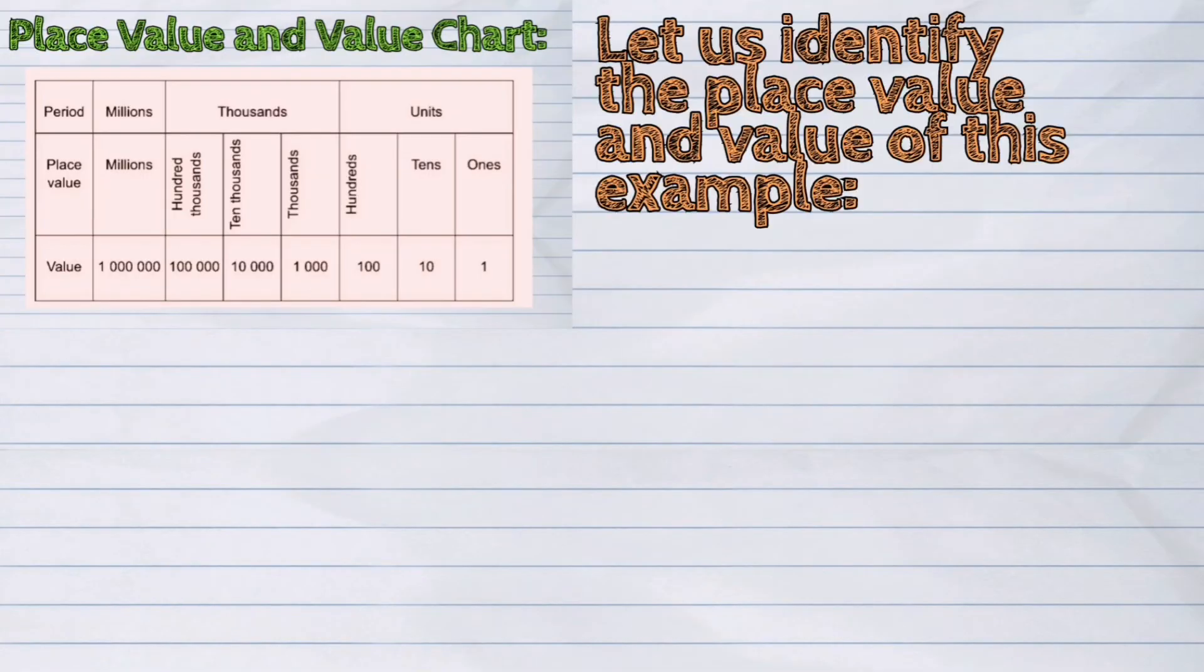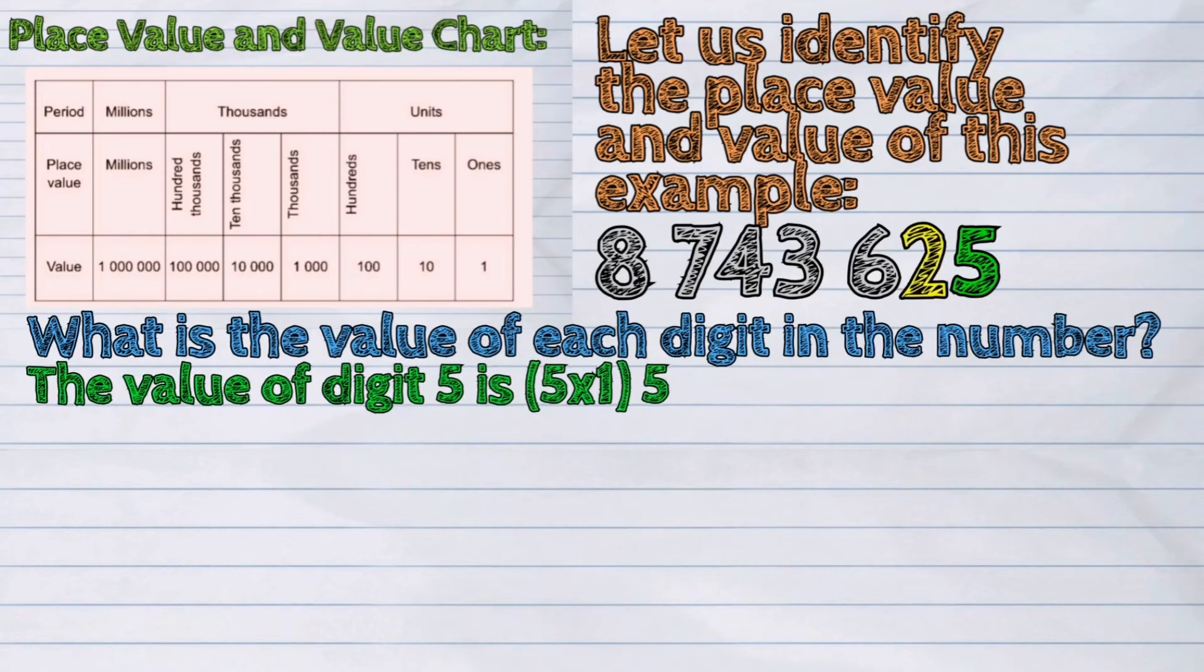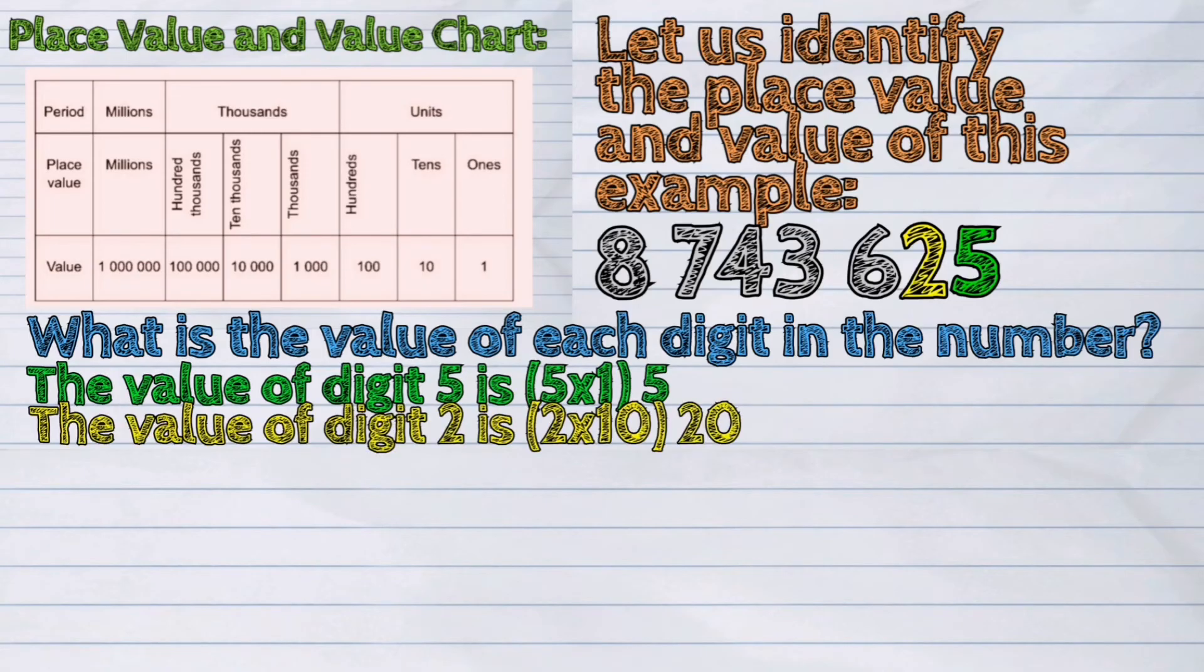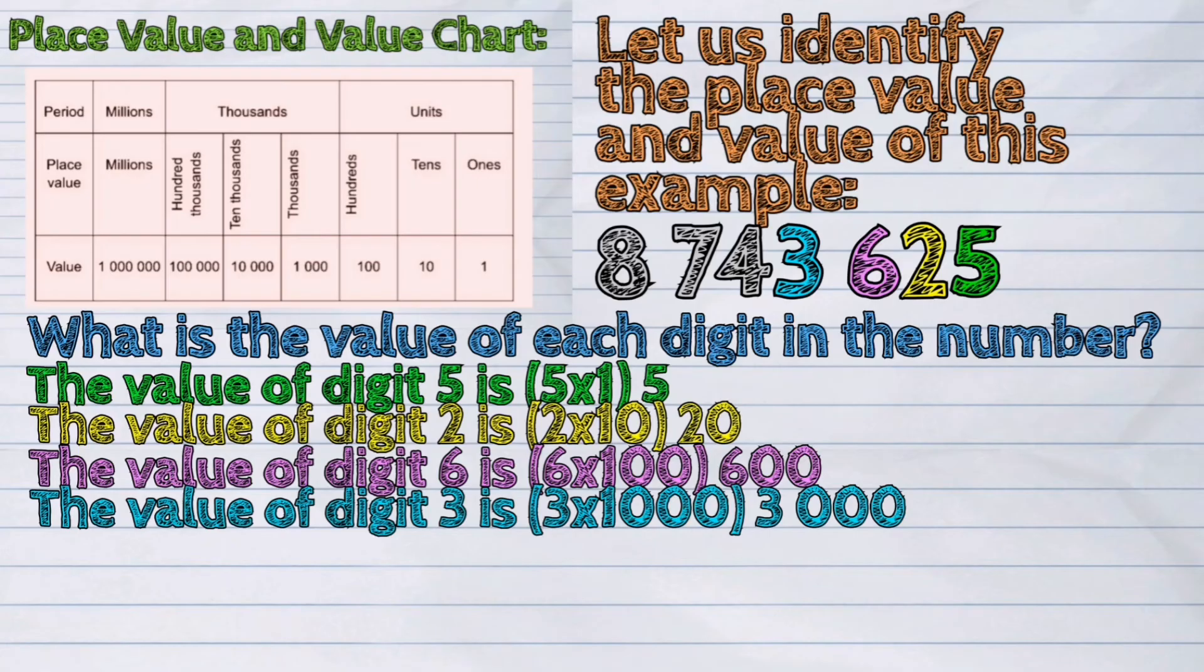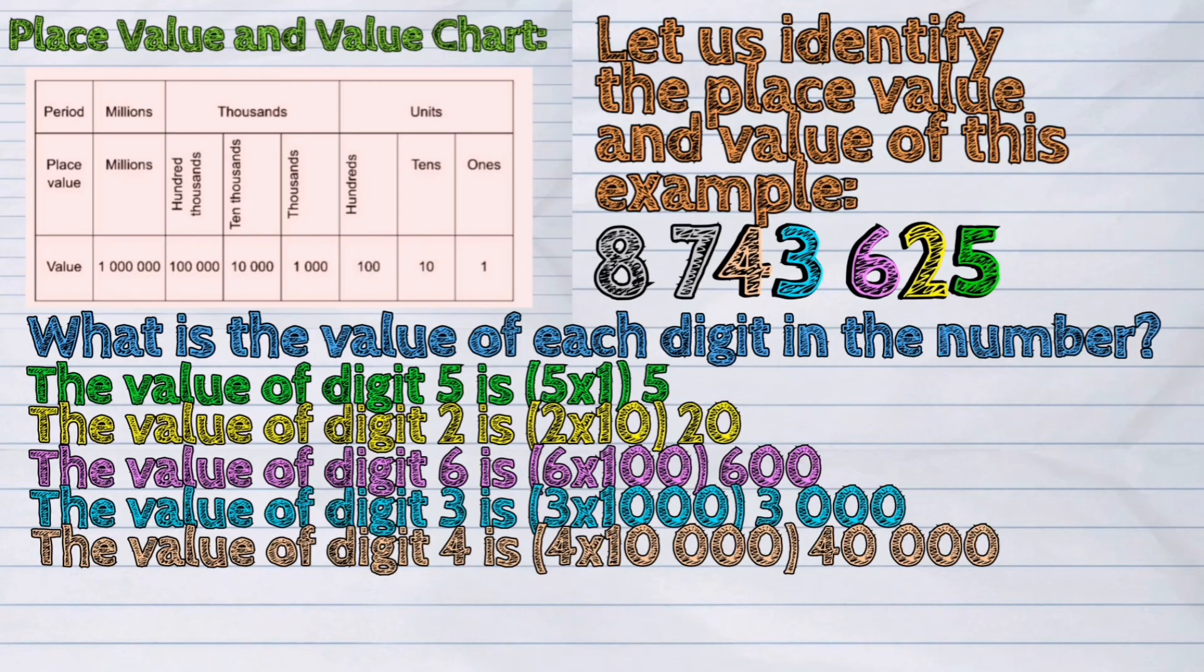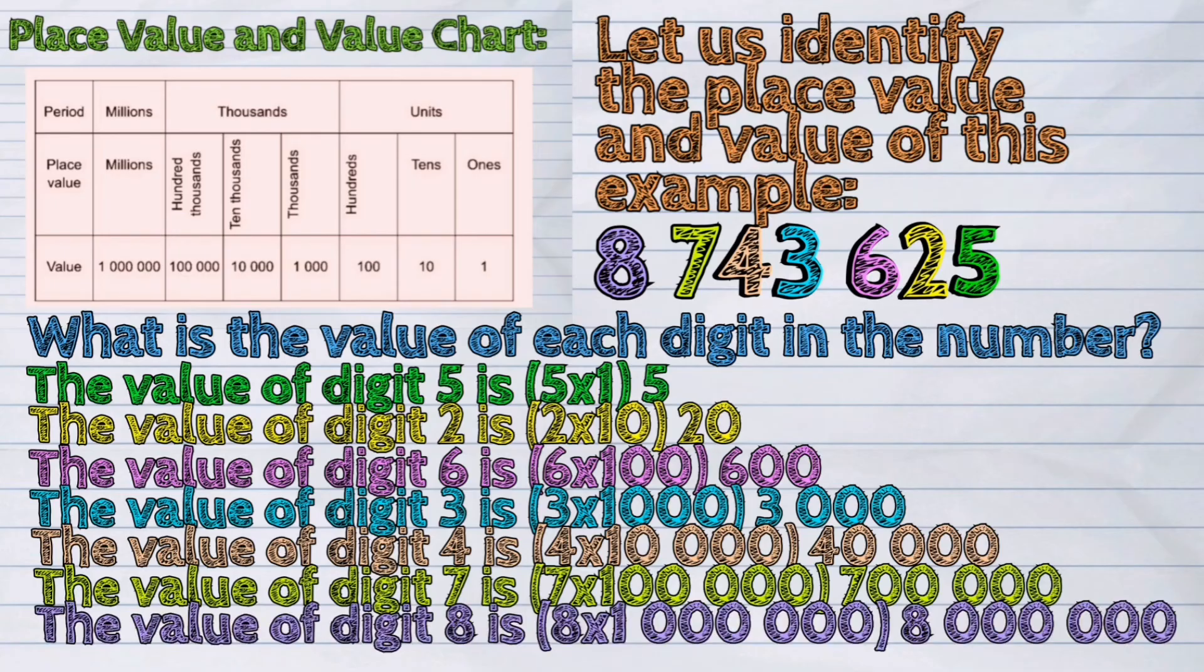In our given example, the value of five is five. The value of two in the tens place is twenty. The value of six is six hundred. The value of three is three thousand. The value of four is forty thousand. The value of seven is seven hundred thousand. And the value of eight is eight million.